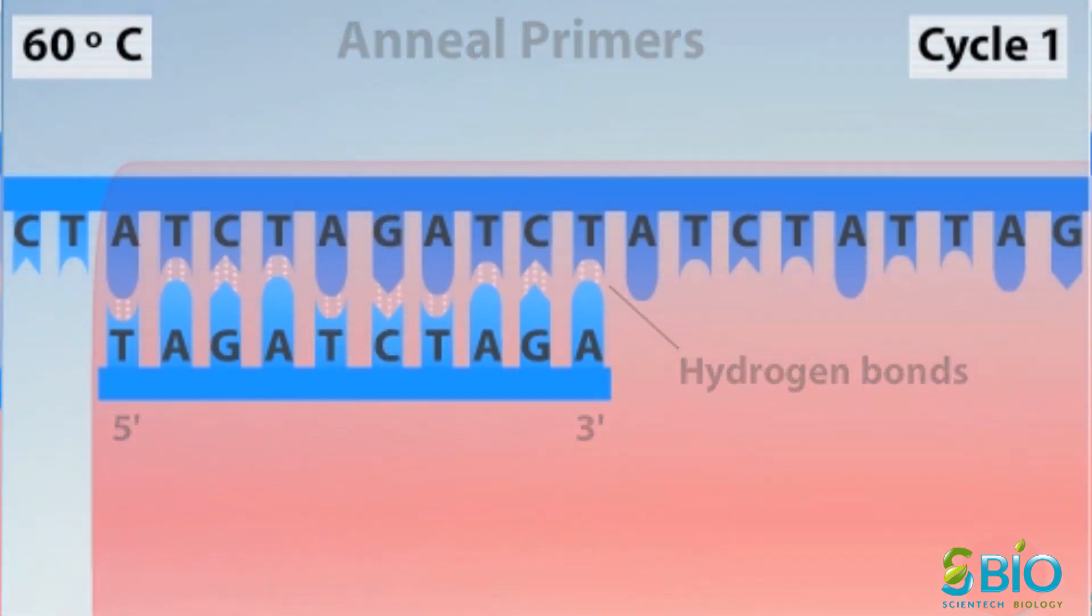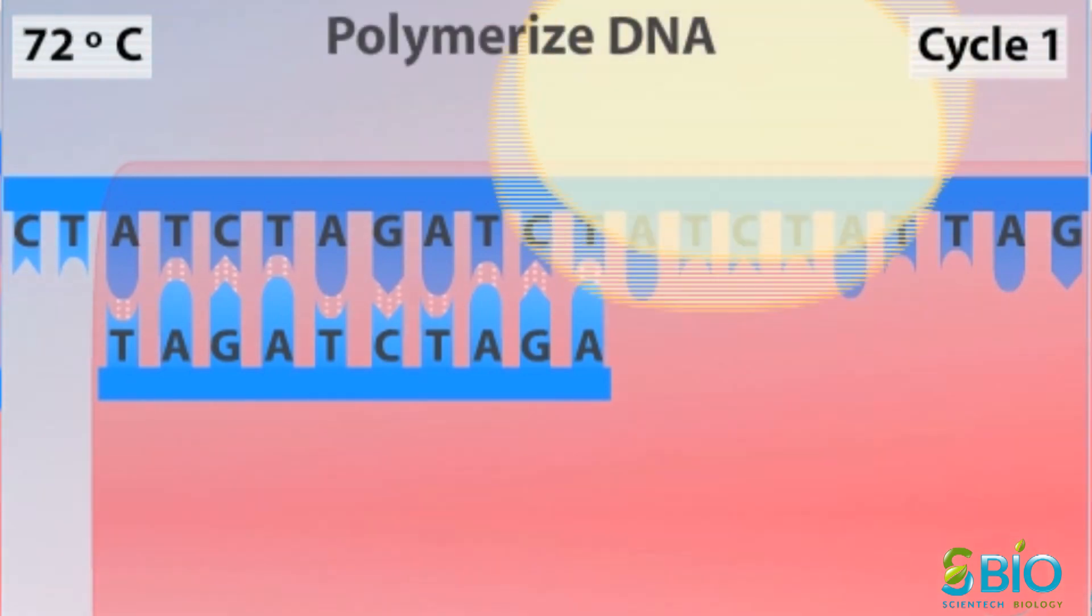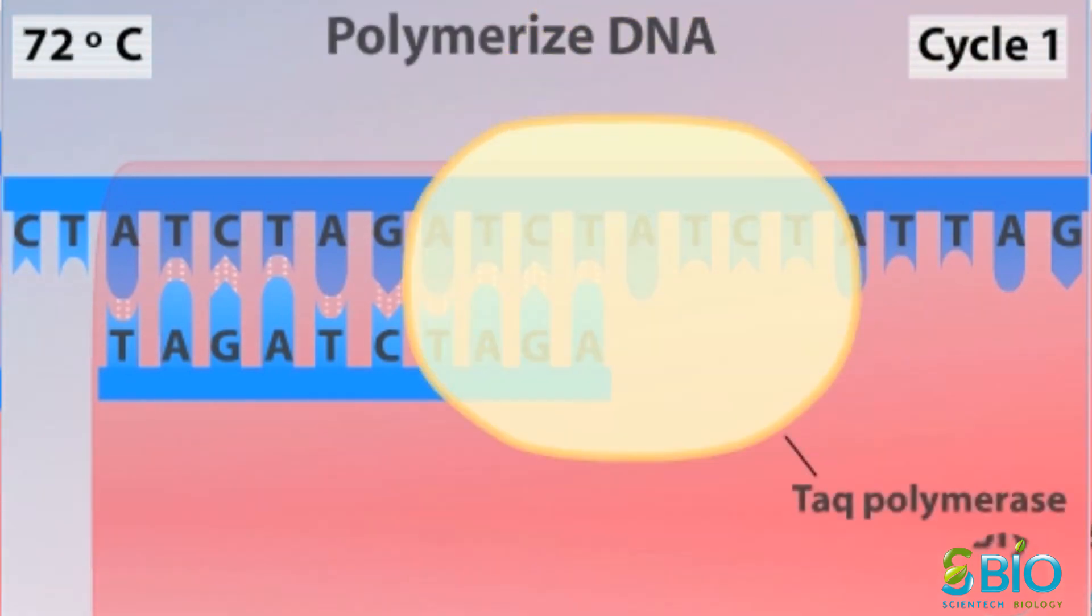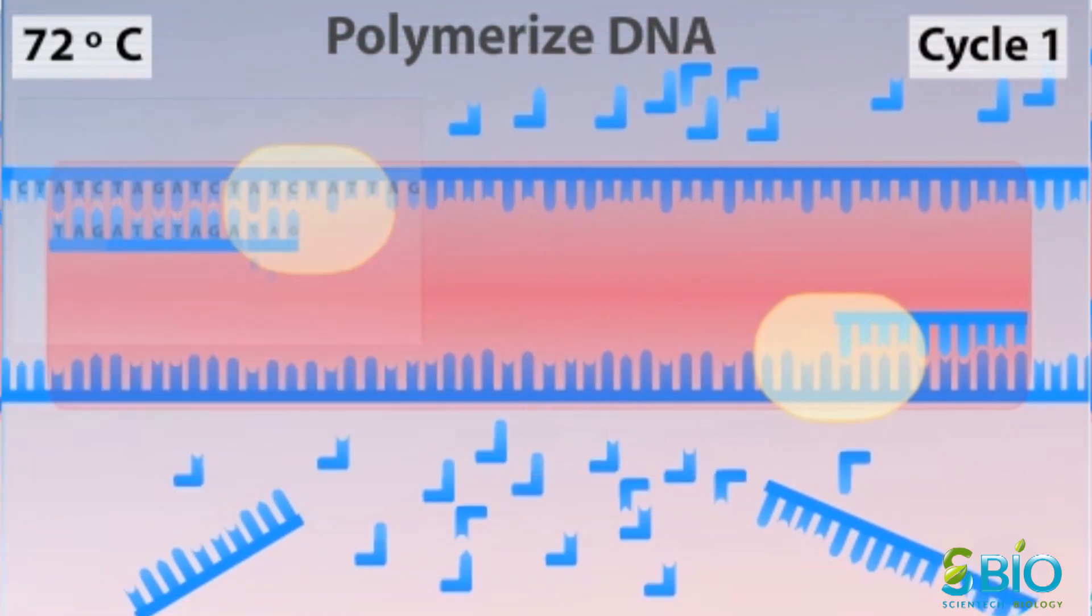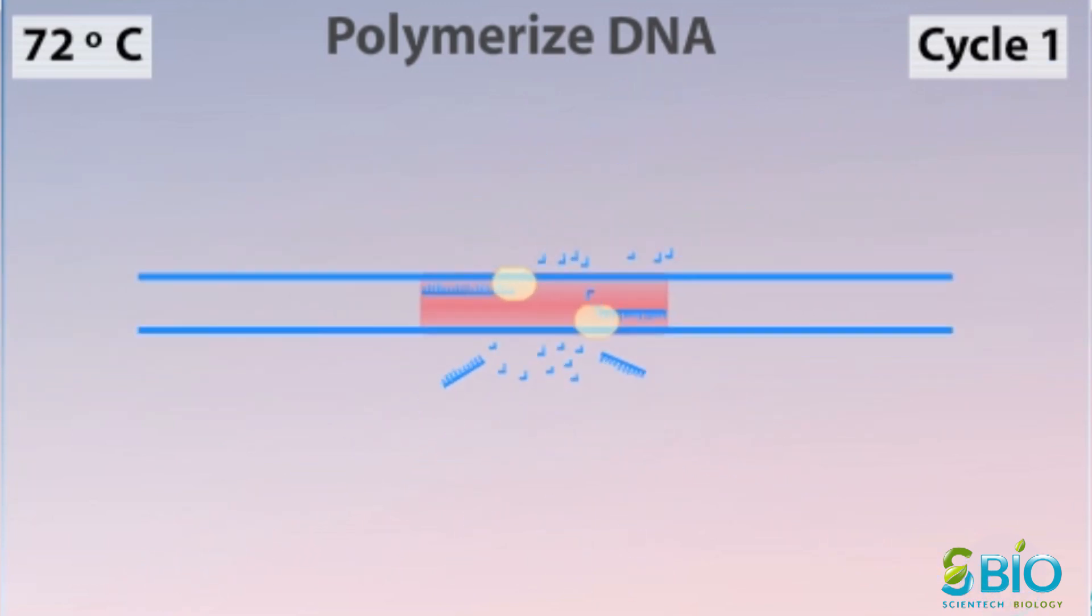In the next phase, the temperature is raised to 72 degrees Celsius. Taq polymerase functions optimally at this temperature and begins polymerization, adding nucleotides to the 3' end of each attached DNA strand. After one complete cycle, there are two double-stranded copies of the target DNA.